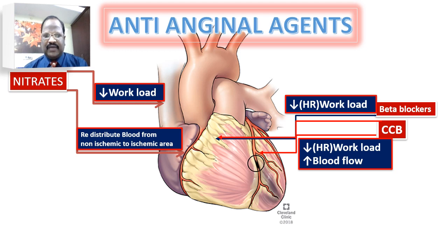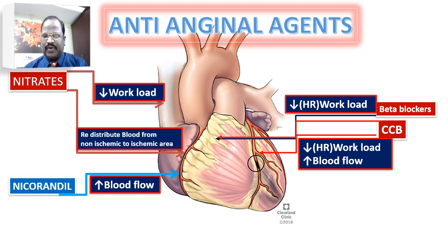Then we have potassium channel openers — nicorandil — which has nitric oxide-releasing properties and increases blood flow to the ischemic area.